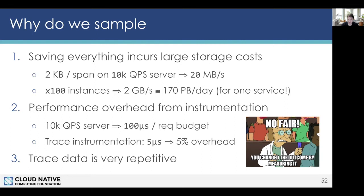If we're not sampling, the instrumentation collecting data from the application introduces performance overhead. For example, a service doing 10,000 QPS has roughly 100 microseconds per request. If instrumentation takes 5 microseconds, that's already 5% overhead on compute costs — significant at large scale. The third reason is that trace data is very repetitive: a majority of traces look the same with similar shapes and latency measurements, so storing all of them doesn't provide more insights. That's why we sample.